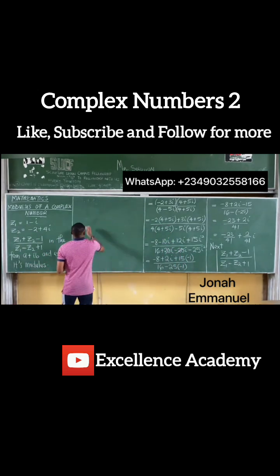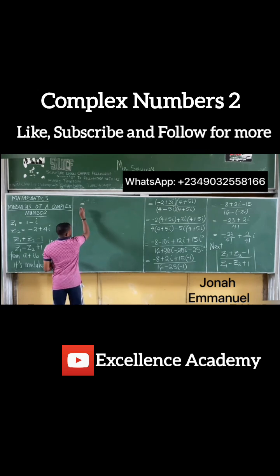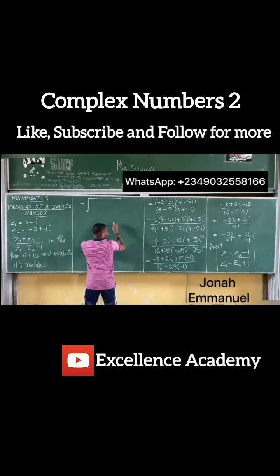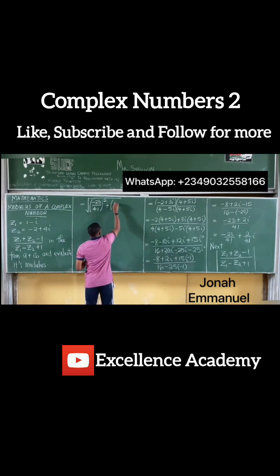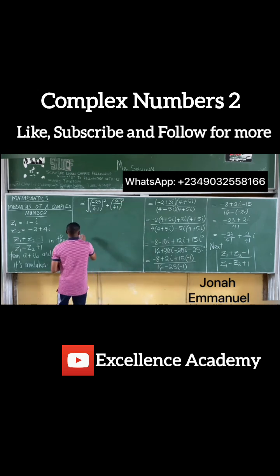Alright. So the modulus will now be equal to the square root of minus 23 over 41 squared plus 2 over 41 all squared. Let me get my calculator.